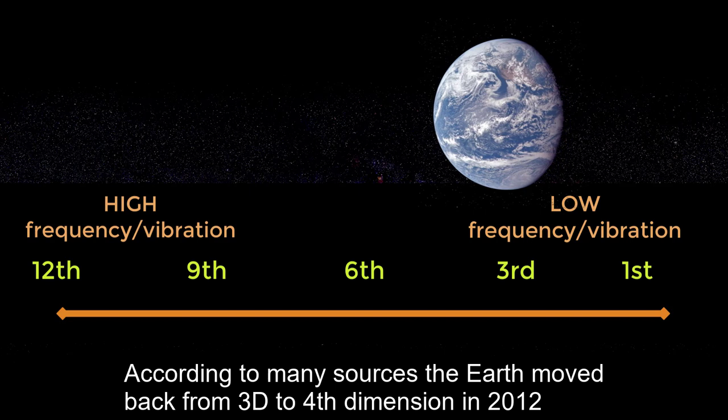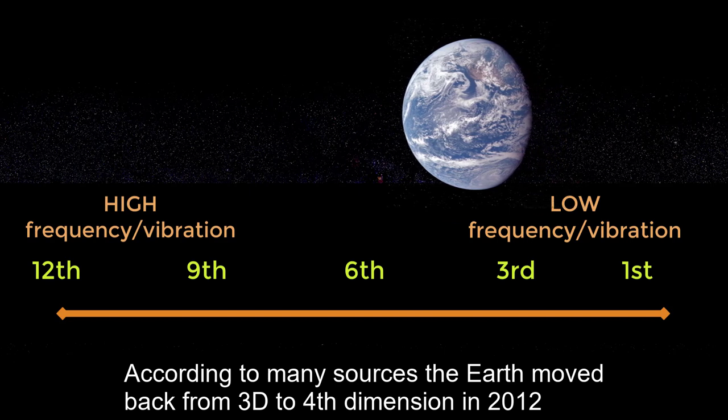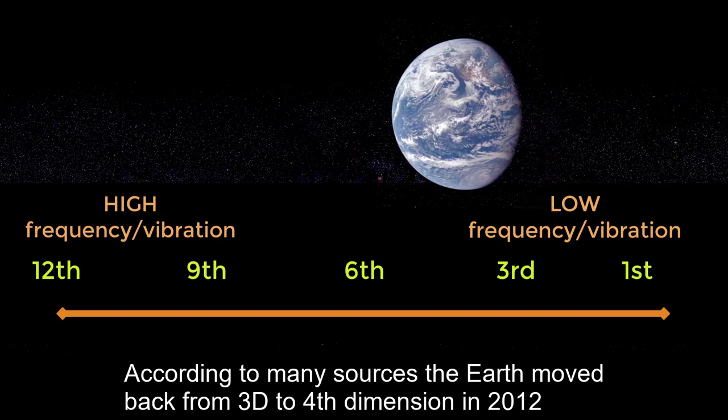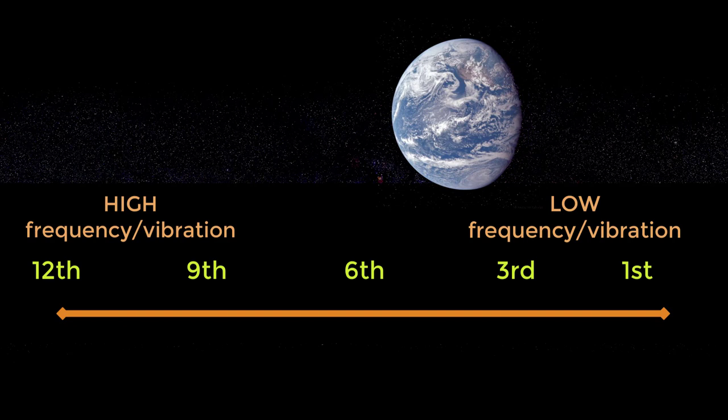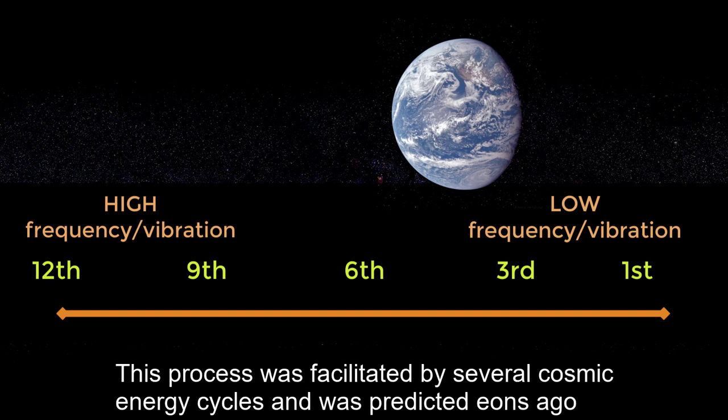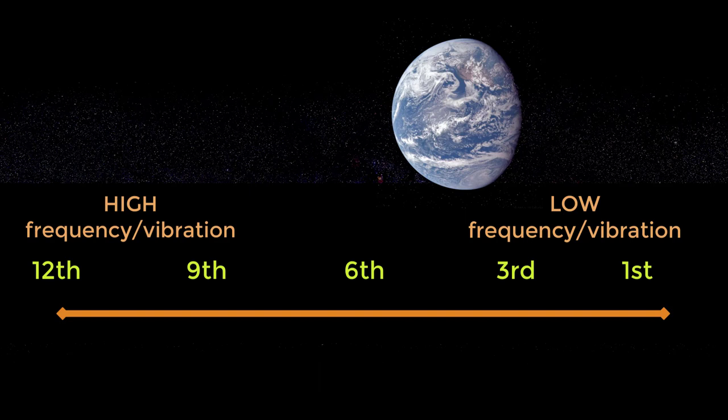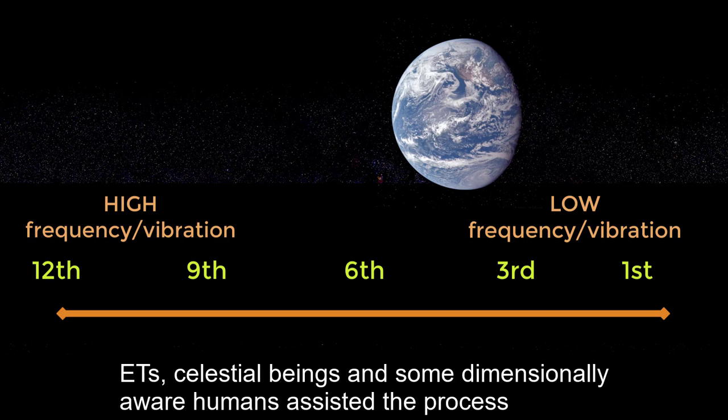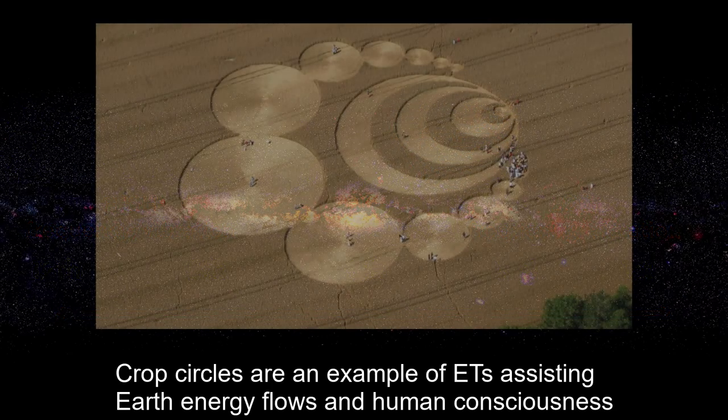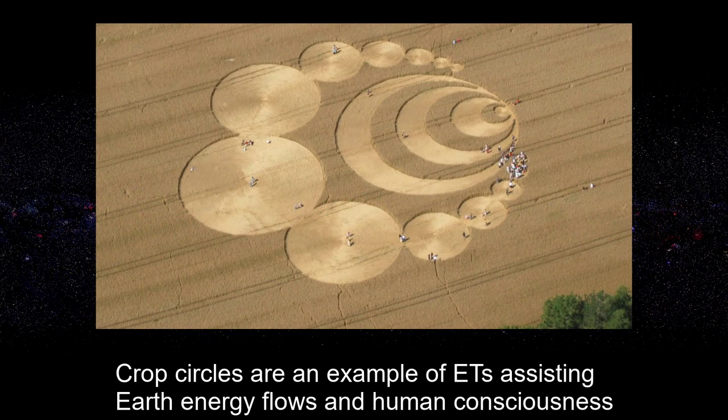According to many sources, the Earth moved back from the 3rd dimension to the 4th dimension in 2012. This process was facilitated by several cosmic energy cycles and was predicted eons ago. ETs, celestial beings, and groups of dimensionally aware humans assisted. Crop circles are an example of ETs assisting Earth energy flows and human consciousness.